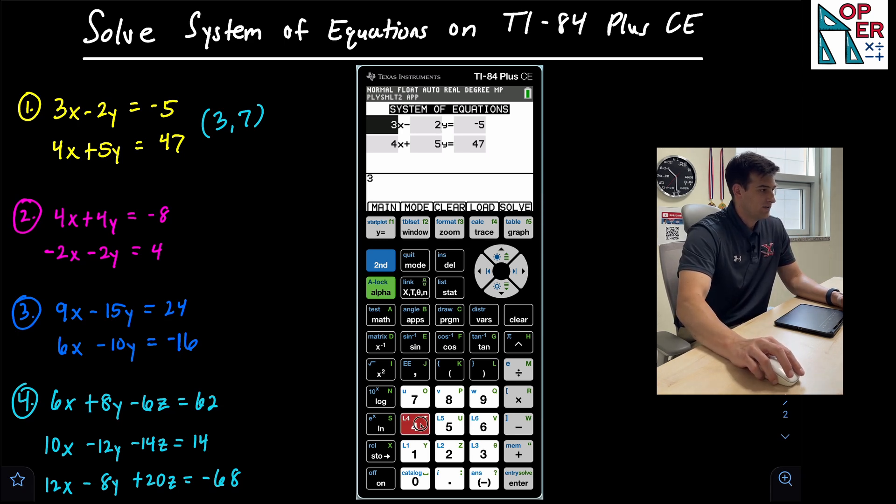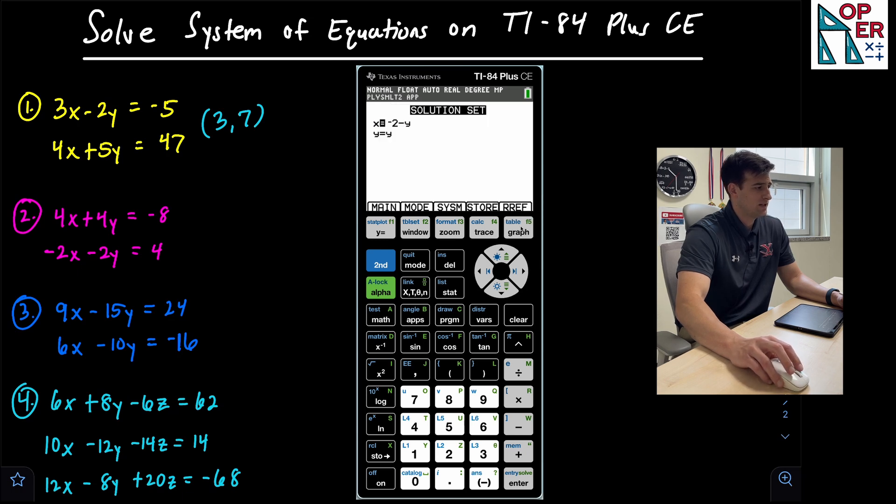So for number two, we have 4X plus 4Y. So 4X change this to plus 4, and then this is equal to negative eight. Now for my next one, we had negative 2X minus, and we'll change that to subtraction 2Y, and that's equal to four. So now we can hit solve.